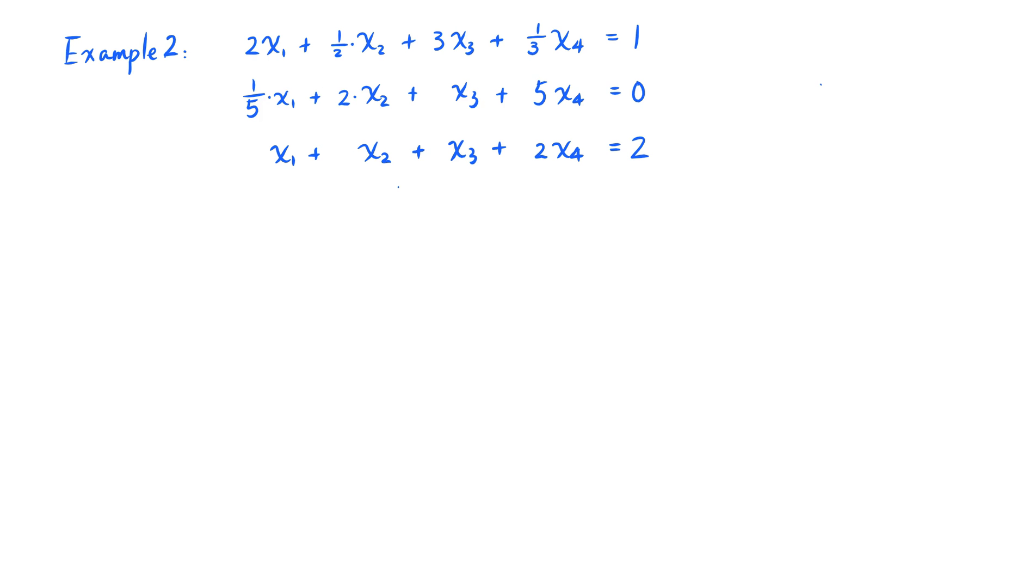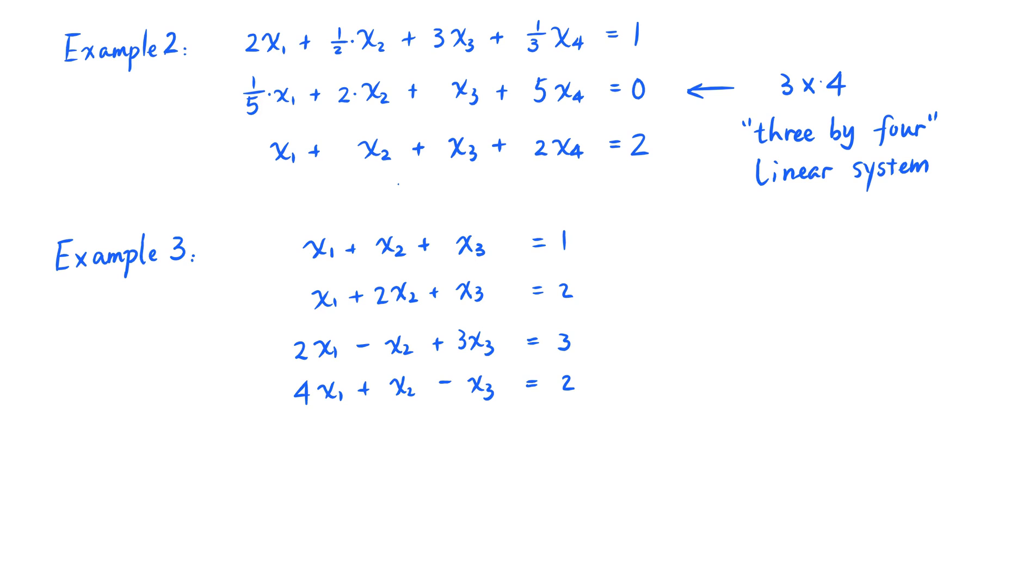So if you have 3 equations for 4 unknowns, then it's a 3 by 4 linear system. Now let me give you a quick quiz. In example 3, what is the number of equations? That's right, it's 4. And what is the number of unknowns? Let's see, 1, 2, 3. So it's 3. And therefore this is a 4 by 3 linear system.